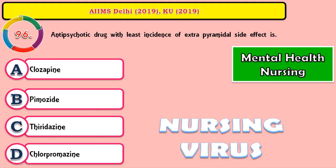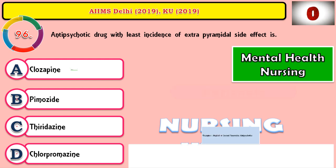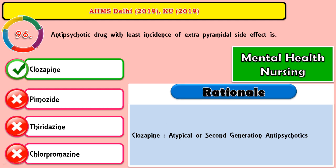Question 96: Antipsychotic drugs with the least incidence of extrapyramidal side effects is? The correct answer is clozapine, which belongs to atypical antipsychotics — also called second-generation antipsychotics — and commonly won't produce many side effects.